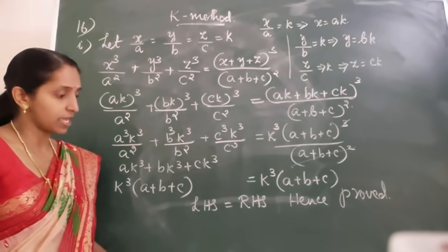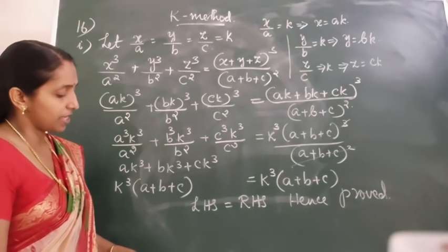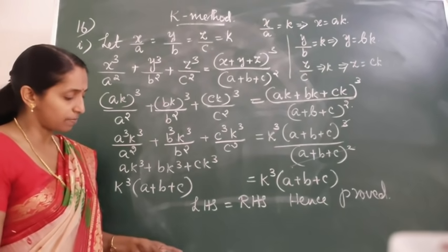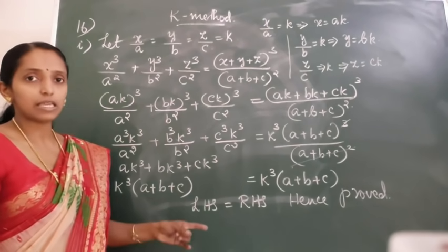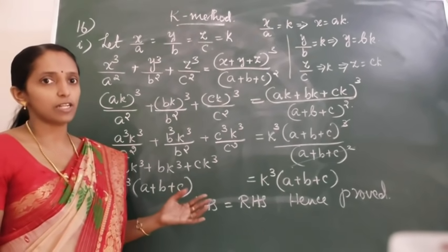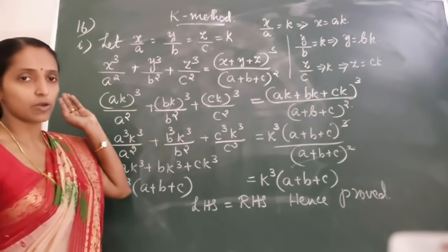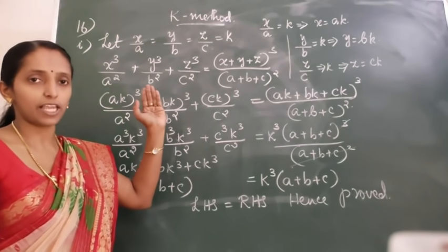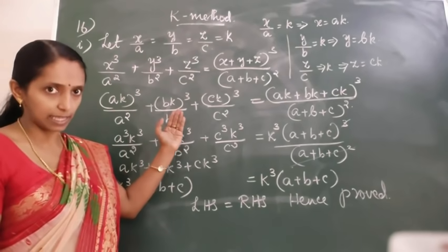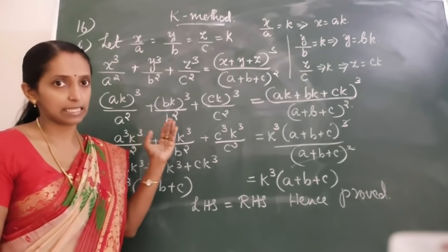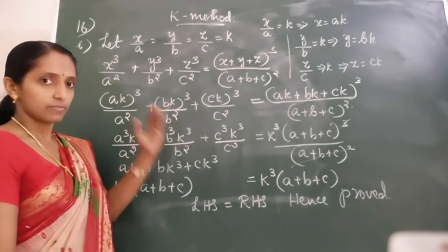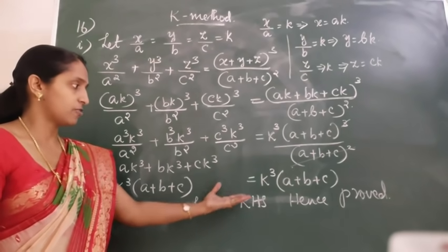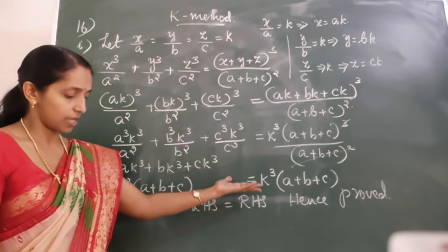Question 17 is also the same. What is given? A upon B equal to C upon D equal to E upon F. You will equate A upon B equal to C upon D equal to E upon F equal to K. Then you will get the values of A, C, and E in terms of K. Whatever LHS and RHS is given you will substitute and simplify. Finally you will get LHS equal to RHS.